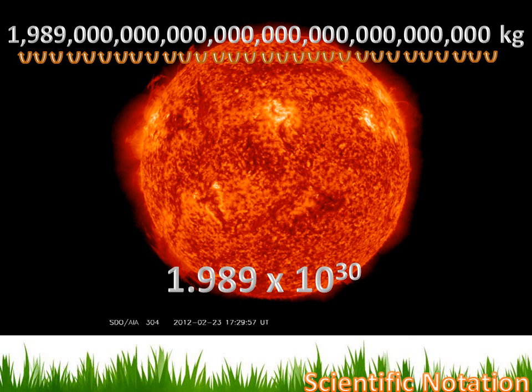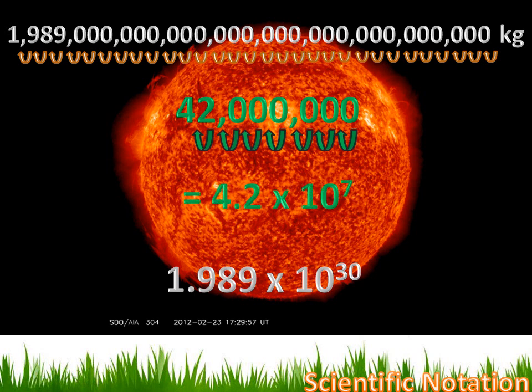Well, let's look at a simpler example and see if that helps you understand. This is a big number, but it's not nearly as big as the mass of the Sun, 42 million. And I want to convert that to scientific notation. So what I want to do is move my decimal place once, twice, three times, four times, five times, six times, seven times. And that's going to leave me 4.2 times 10 to the seventh.